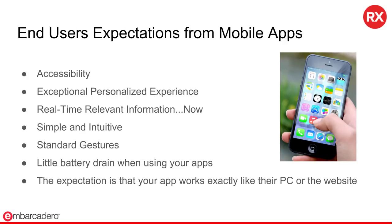Users of mobile apps, whether thing-connected or not, expect that the application they use will work well. As those expectations get higher, we have to work harder to meet those requirements to make apps relevant and useful to the end users. Accessibility — how's the performance in accessing your app? Does it take a long time to load the data? They want an exceptional personalized experience, so you're building apps that adapt or change to match the needs and interests of your end users. Real-time, relevant information now. They want it to be simple and intuitive.